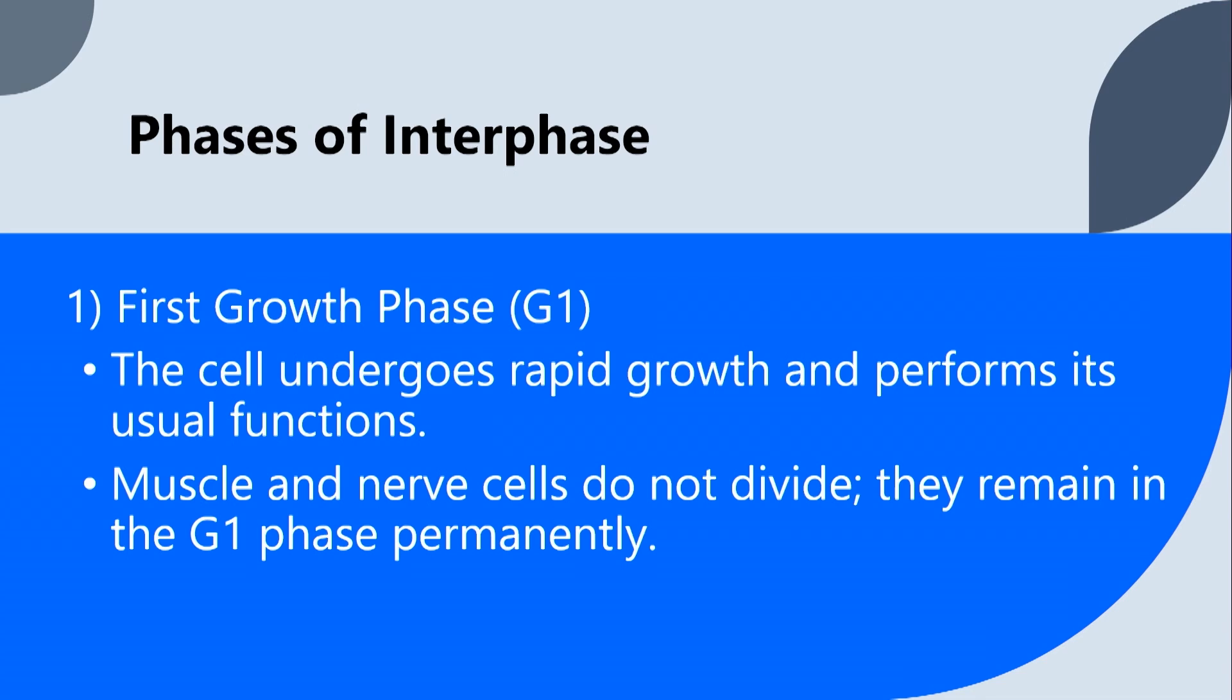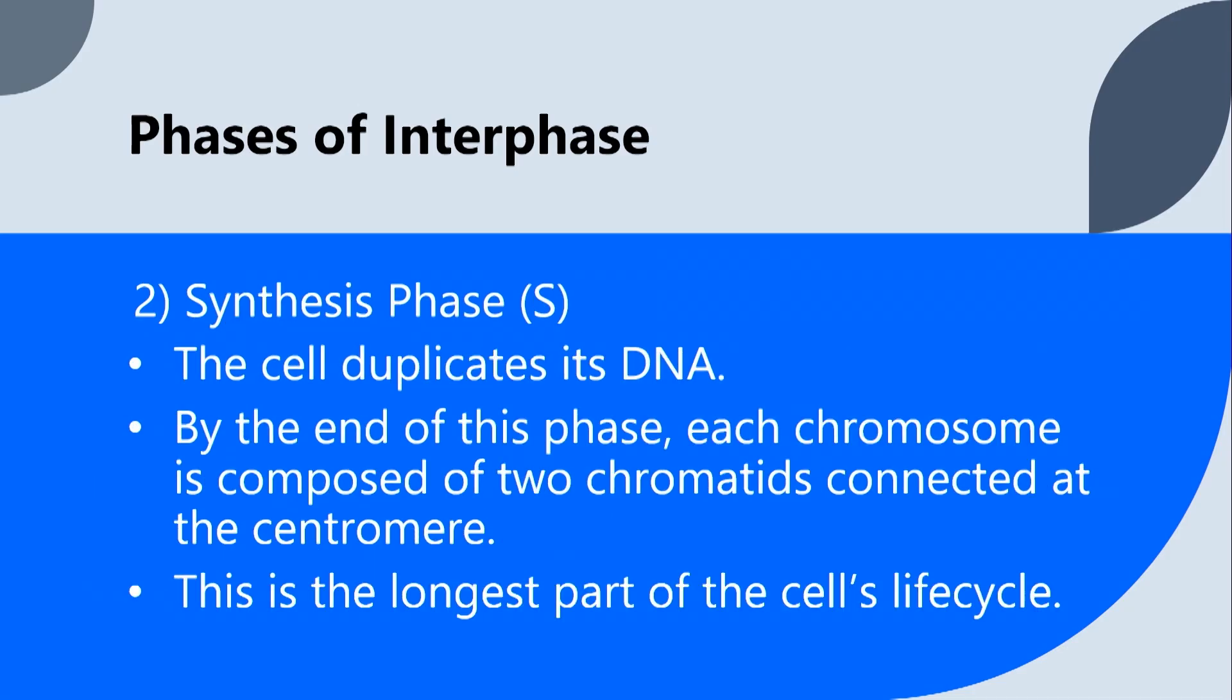Some cells actually do not divide. So skeletal muscle cells and nerve cells do not divide. And so they'll just stay in this G1 phase permanently. They won't really continue throughout the full cell cycle. So once the cell's reached a certain point, once it's gotten large enough, it'll enter into the next part of interphase, which is known as the S phase.